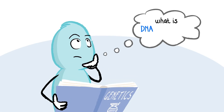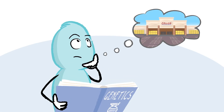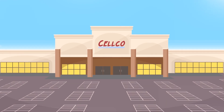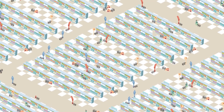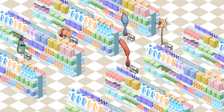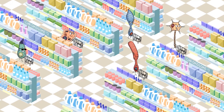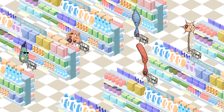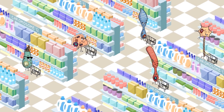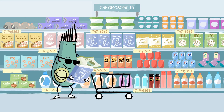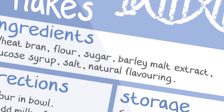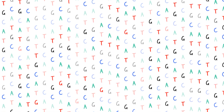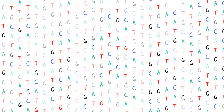Sometimes people ask what DNA sequencing is. Imagine an enormous supermarket with thousands of products. Each of the cells inside your body shops in the supermarket, and each cell needs a different combination of products depending on its job in the body. Each product is carefully labelled with information about how it was made and how it should be used. This information is written in a special code, which we call its DNA sequence.